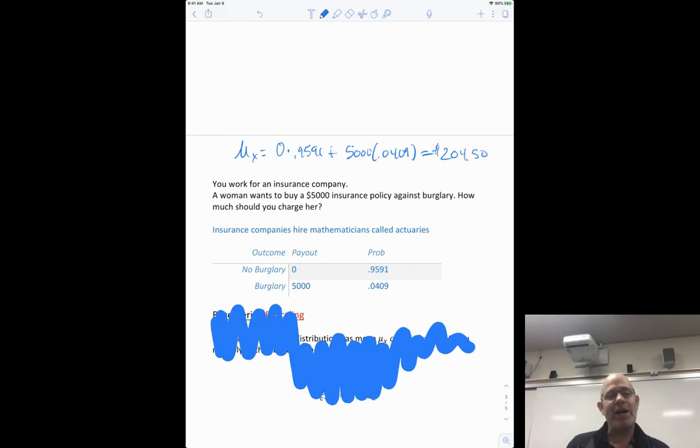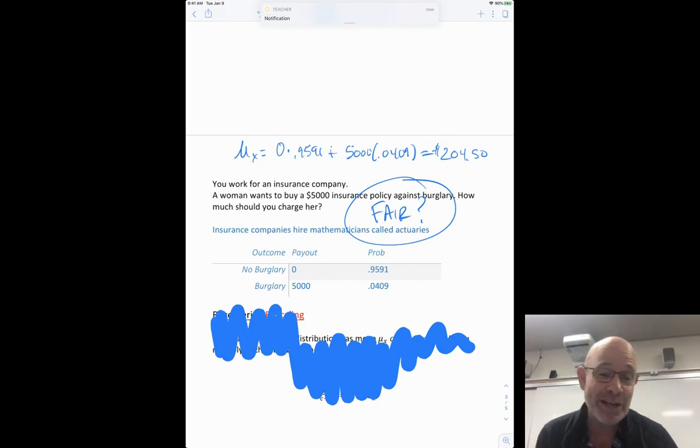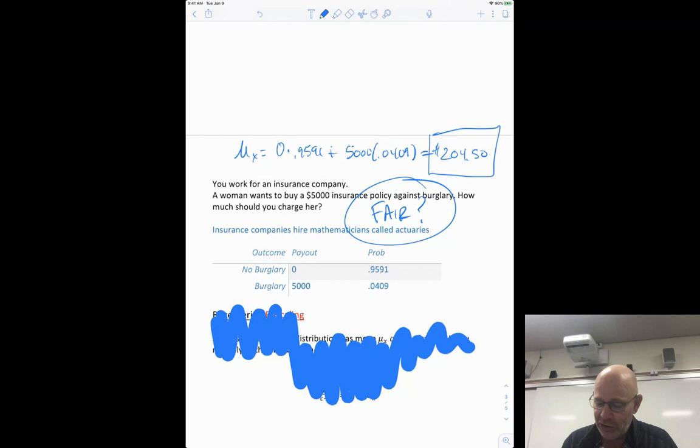So if I just do expected value again, the expected value would be 0 times 0.9591 plus, and I can do this in my calculator also, just with lists, list 1 and list 2, but this is pretty simple because that first number is 0. So $5,000 times 0.0409 is $204.50. So when they ask these questions, how much should they charge? It's always under the implication that the policy or the game is fair. And what fair means is that everyone's going to break even. Clearly in the real world, it's not fair. The insurance company doesn't want to be fair because they don't want to break even. So we're going to say they're going to charge $204.50. However, they would charge more because they need to charge more to make money. But just in terms of staying fair, that's how that works.